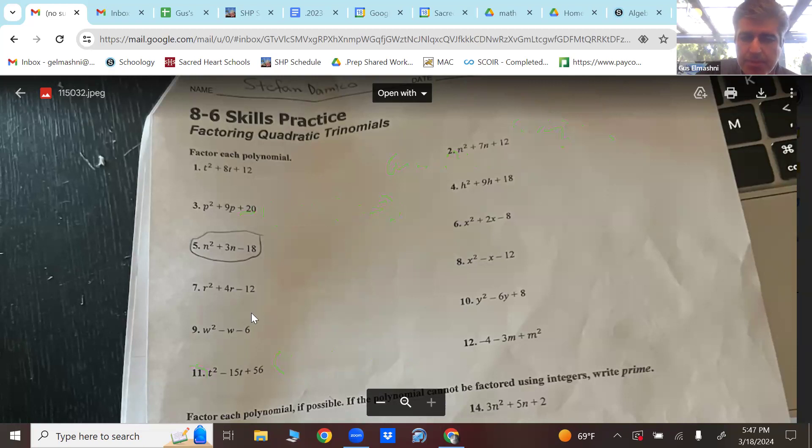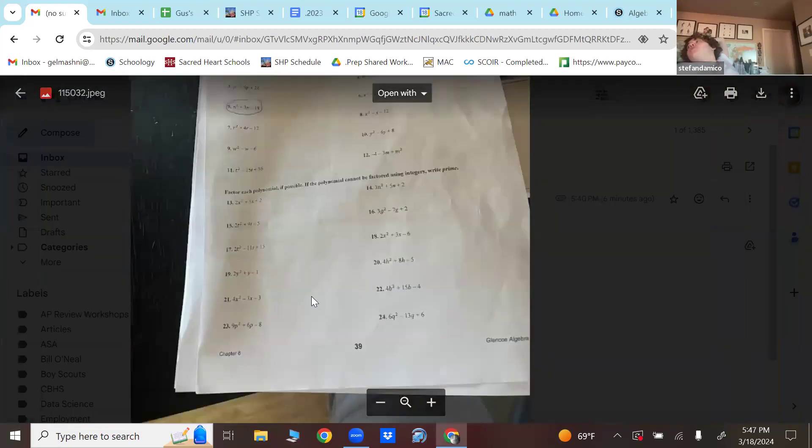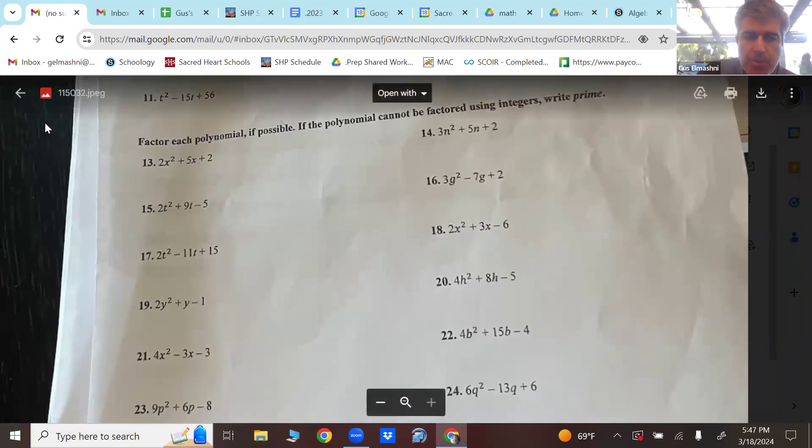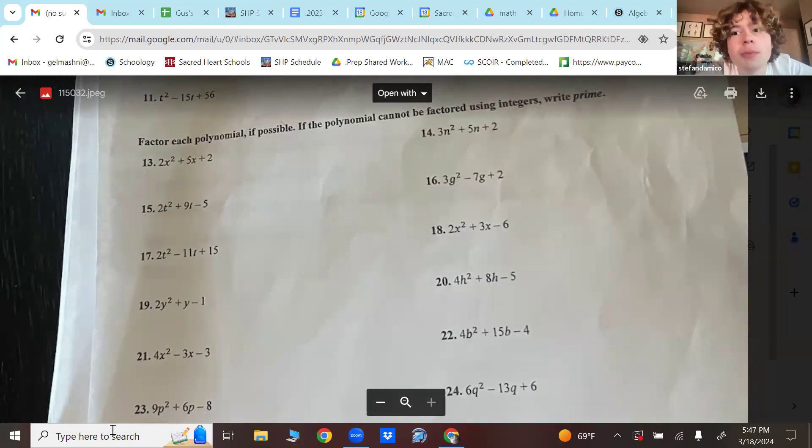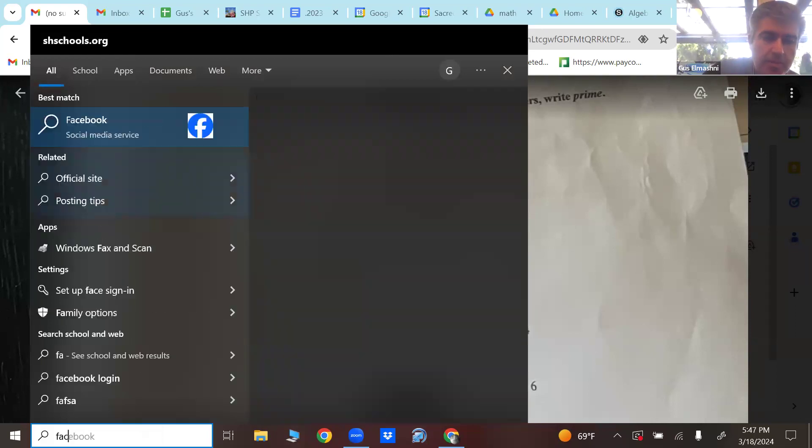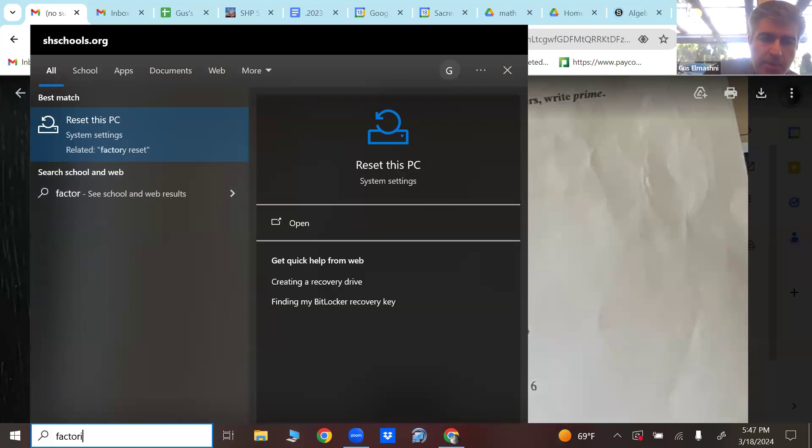What multiplies to 56 but adds to negative 15? Negative 7 and negative 8. And they're both negative, of course. So I think we're good there. Let's look at the more complicated ones. We'll need to simmer on those a little bit. If there's a GCF, do look for it.